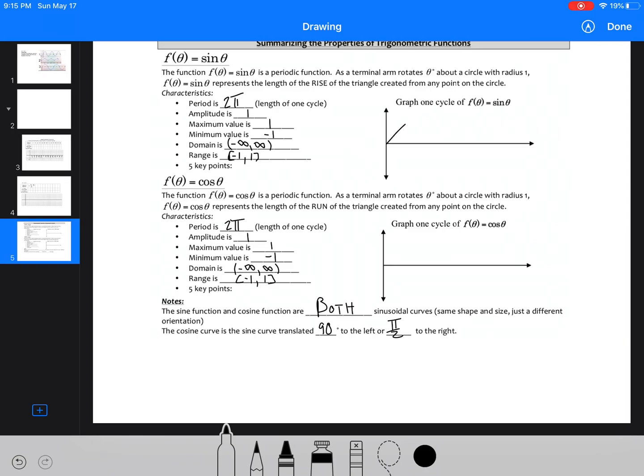So the sine function looks like this. It starts at 0, 0, ends at 2 pi. We go up to 1, down to negative 1. This one, the cosine function, starts at 1, goes to 2 pi. So the exact same graph. They just start in a different spot. This is pi. This is pi. It's just been moved over. And that's it.